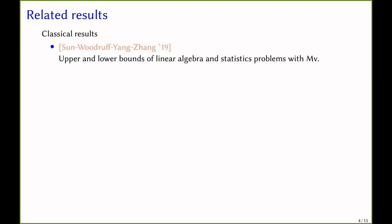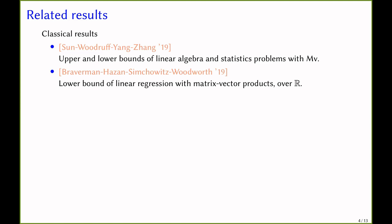Before we dive into the details about our contributions, let's talk about previous results. In the classical setting, in 2019, Sun, Woodruff, Yang, and Zhang studied upper and lower bounds of linear algebra and statistics problems with matrix-vector products. Also in 2019, Braverman, Hassani, Shinchot-Woods, and Woodruff studied lower bounds of a linear regression problem with matrix-vector products over the real numbers. In particular, they show that with this query model, linear regression has a linear lower bound in the dimension of the matrix.